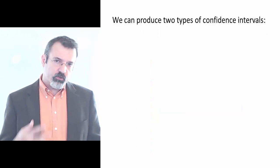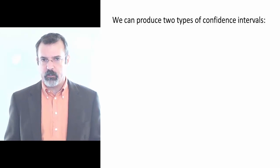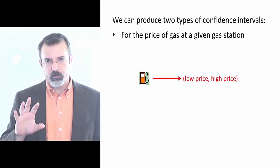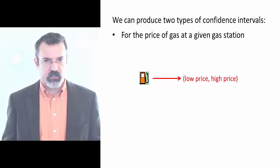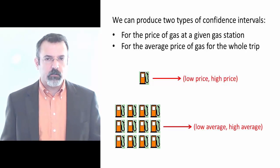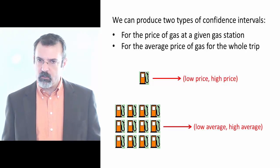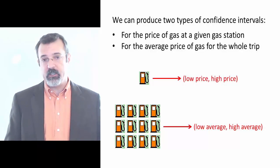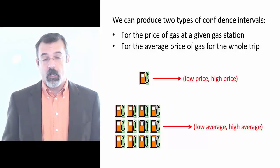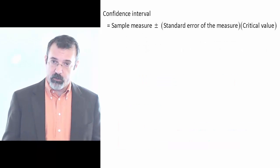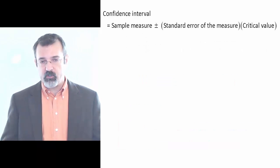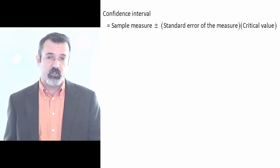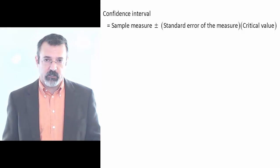We can produce two types of confidence intervals here. One is a confidence interval for the price of gas at a single gas station. The other is a confidence interval for the average price of gas at all the gas stations you stop at. A confidence interval is the sample measure plus or minus the standard error of the measure multiplied by some critical value.